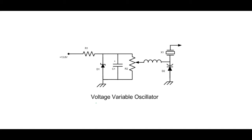Before we discuss phase lock loop we need to go over a couple of building blocks, and one of those is the voltage controlled oscillator. These days voltage controlled oscillators come in integrated circuit packages, but the principle is important to understand. On the screen I've shown a crystal which is part of an oscillator, and this crystal is in series with a varactor diode. A varactor diode will vary its capacitance depending upon the amount of reverse bias voltage, and if its capacitance changes that's the same as having a trimmer capacitor in series with the crystal.